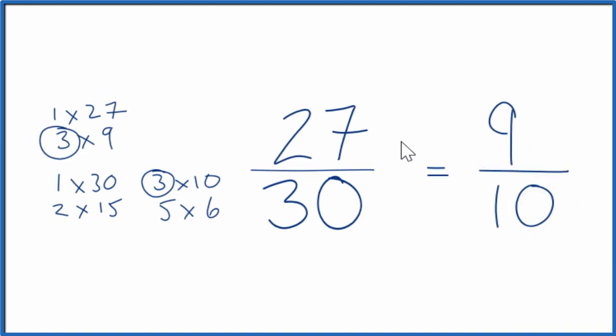So we've simplified the fraction 27 thirtieths down to 9 tenths. And if you divided 27 by 30 or 9 by 10, you'd get the same answer, 0.9. These are equivalent fractions. They're the same. It's just that we've simplified 27 thirtieths down to 9 tenths.